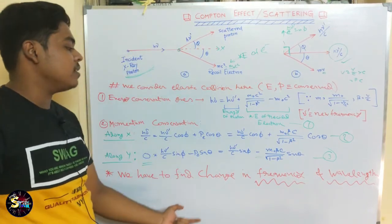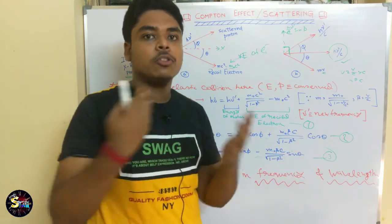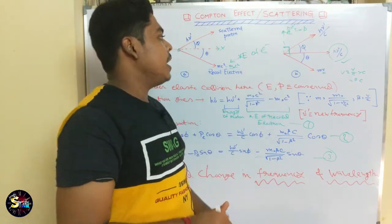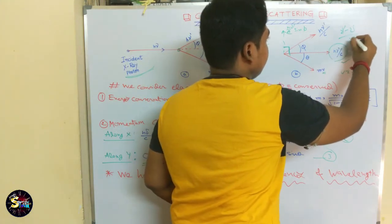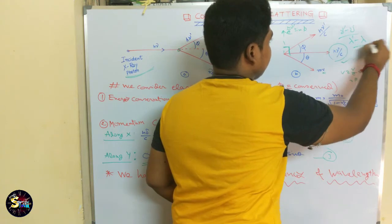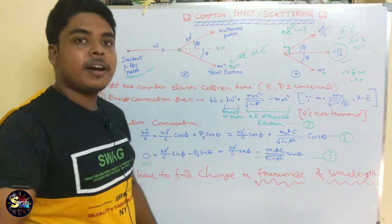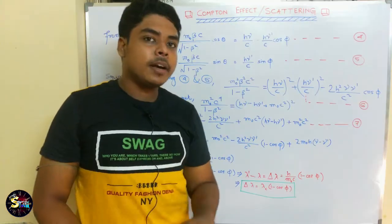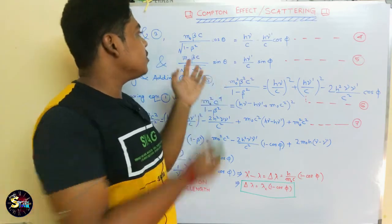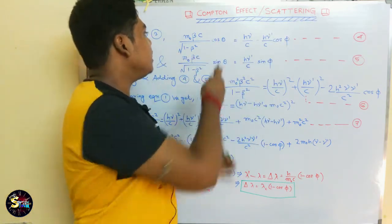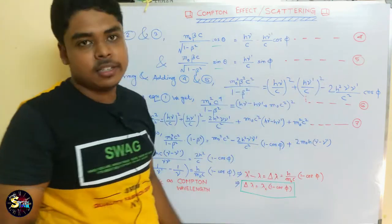We have to find the change in frequency and wavelength. The frequency change is nu prime minus nu, and the wavelength change is lambda prime minus lambda. We now activate our equations to derive this result by combining the energy conservation and momentum conservation equations.